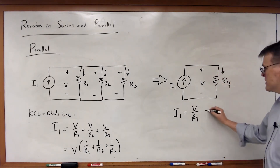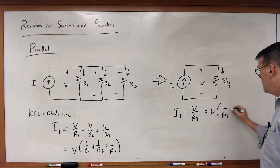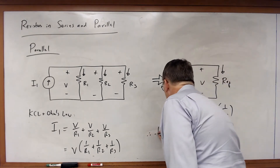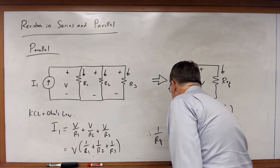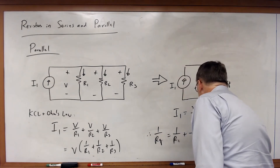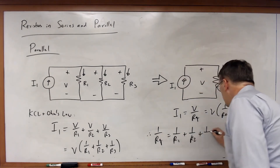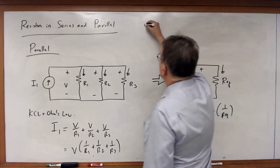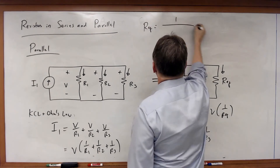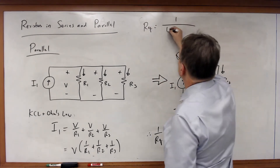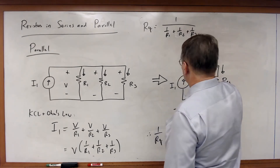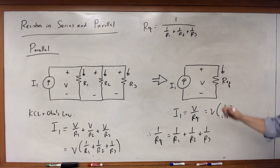For the equivalent circuit, I1 equals V times 1 over REQ. For the two equations to be equivalent, 1 over REQ must equal 1 over R1 plus 1 over R2 plus 1 over R3. So REQ equals the inverse of the sum of the inverses: one over the quantity 1/R1 plus 1/R2 plus 1/R3.